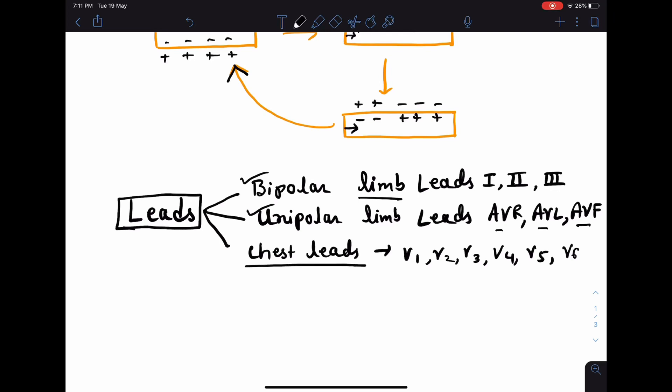The electrical activity in the horizontal plane is recorded by chest leads. Chest leads are six in number. They are V1, V2, V3, V4, V5, and V6.